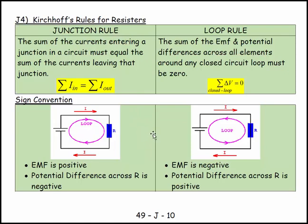It's a way of bookkeeping. When you have circuits, we need to keep track of how the EMFs are balanced by the potential differences and we need to keep track of how currents behave at junctions. And so there's two rules.